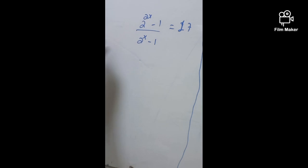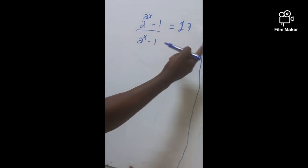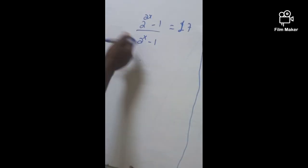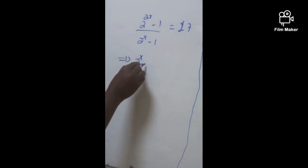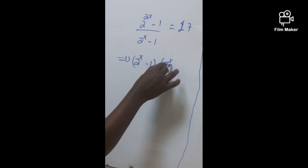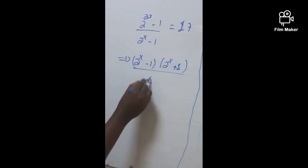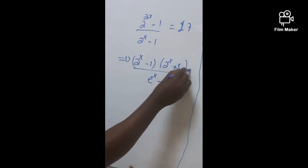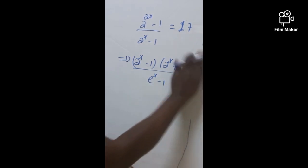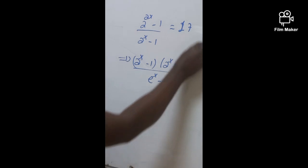So the numerator part (2^x)^2 - 1 is going to be written as (2^x - 1)(2^x + 1). So it is written as (2^x - 1)(2^x + 1) / (2^x - 1) = 17.